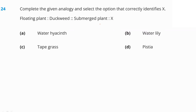Complete the given analogy: floating plant is to duckweed as submerged plant is to what? A submerged plant is totally inside the water at the bottom. The answer is tape grass. So tape grass is the right answer.